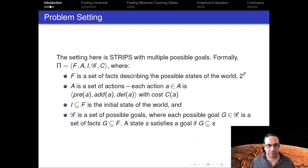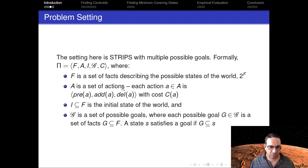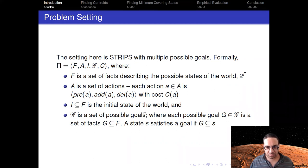More formally, the problem setting is STRIPS with multiple possible goals. We have a set of facts F which describe the state of the world, a set of STRIPS actions A with preconditions, add effects, delete effects, and a cost, an initial state, and a set of possible goals where each possible goal is a regular set of facts.